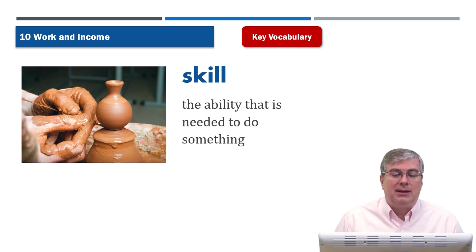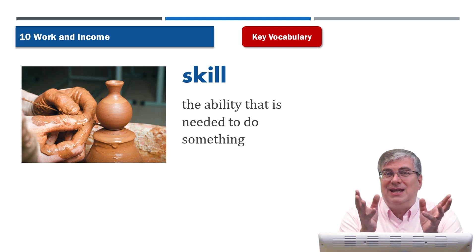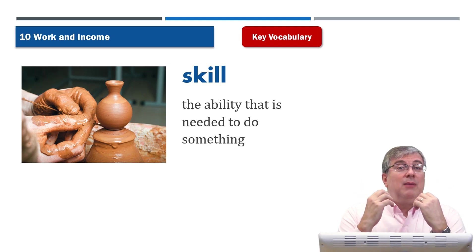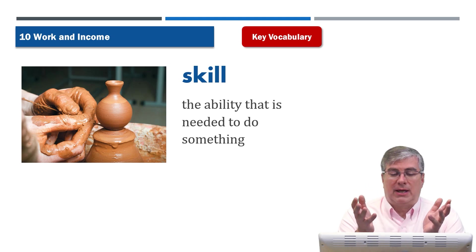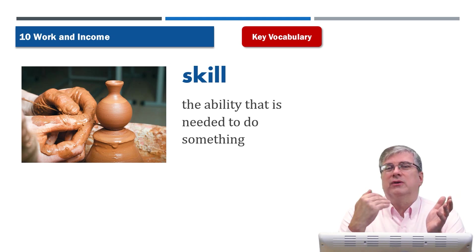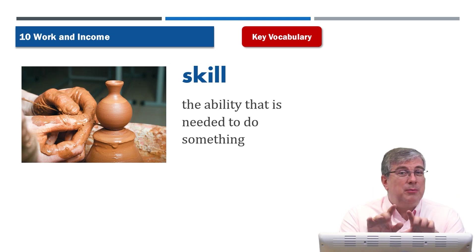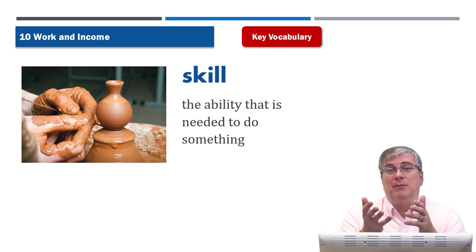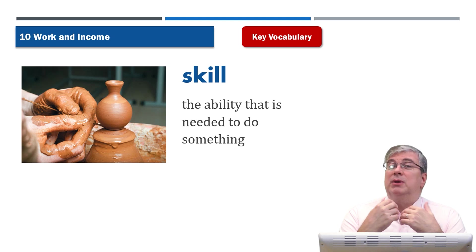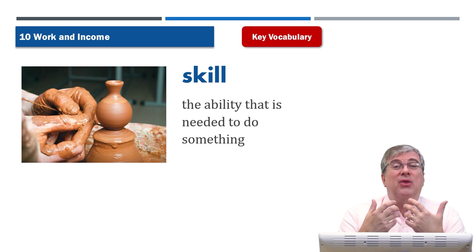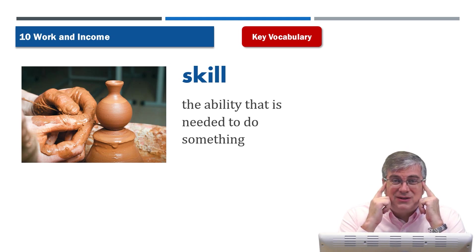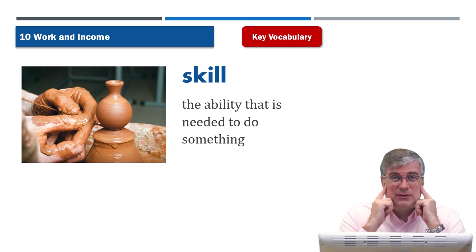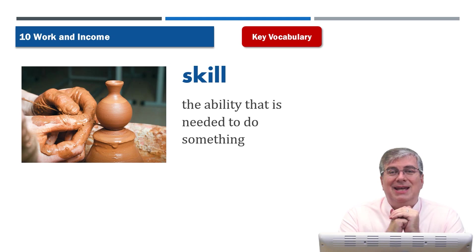Next we have skill. Skill is the ability that is needed to do something. Maybe you're good at playing a piano — skill means you are good at doing something. If you play sports really well you have athletic skills. If you study very well you have good memory skills or maybe good reading skills. So skill is the ability needed to do something.